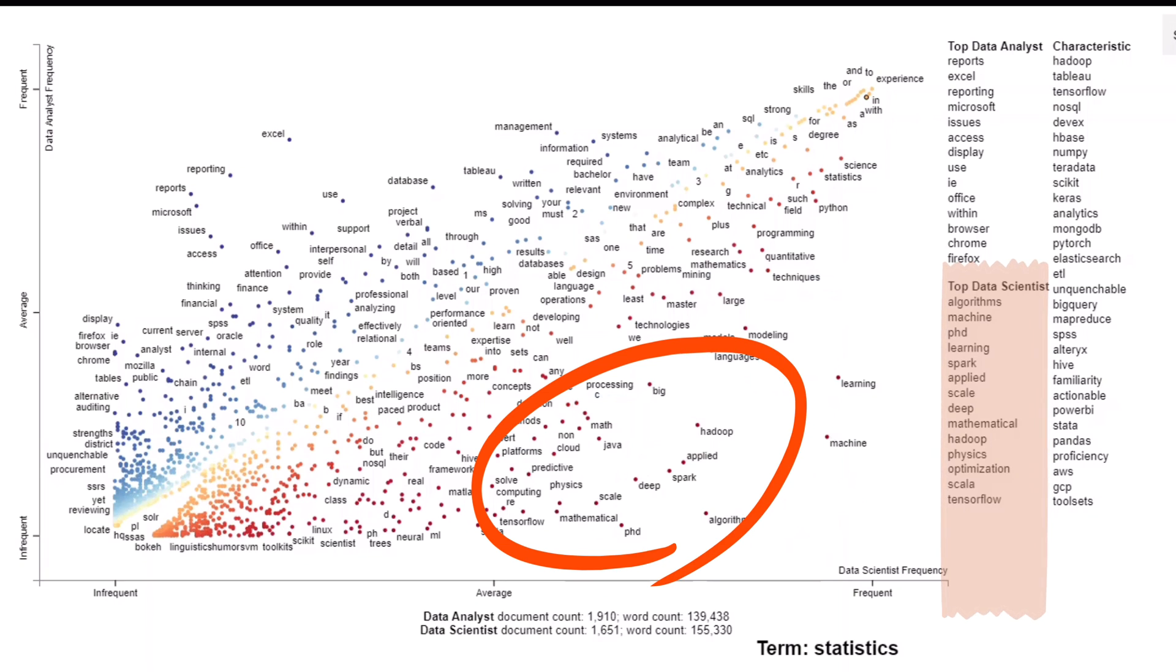As we can see from this graph, requirements for data scientists seem to focus heavily on math, statistics, predictive algorithms, machine learning, optimization, and big data languages such as Hadoop, Spark, Scala. And the data scientist jobs also seem to often require a master or PhD degree. Compared to data scientist roles,